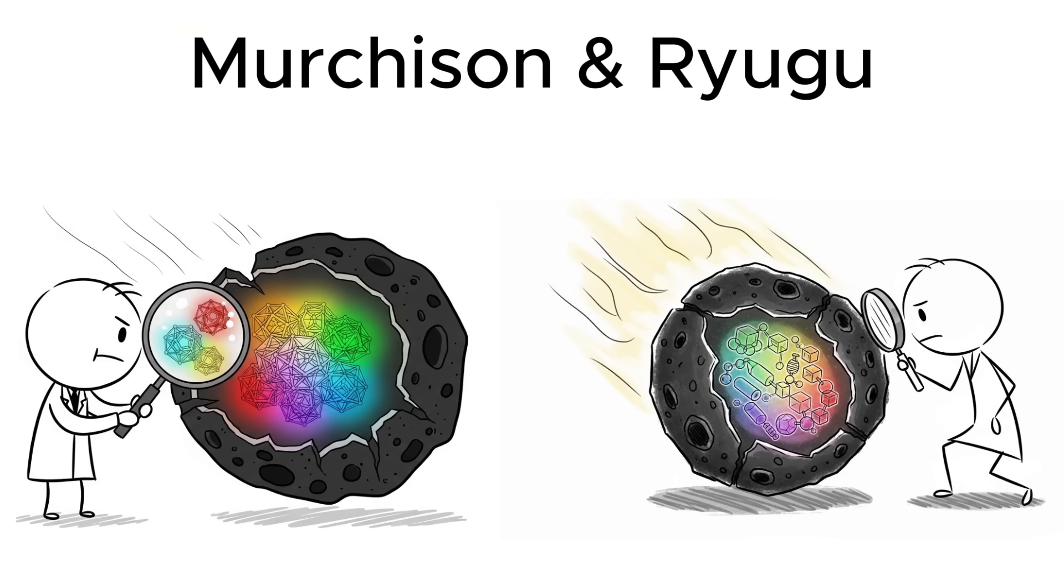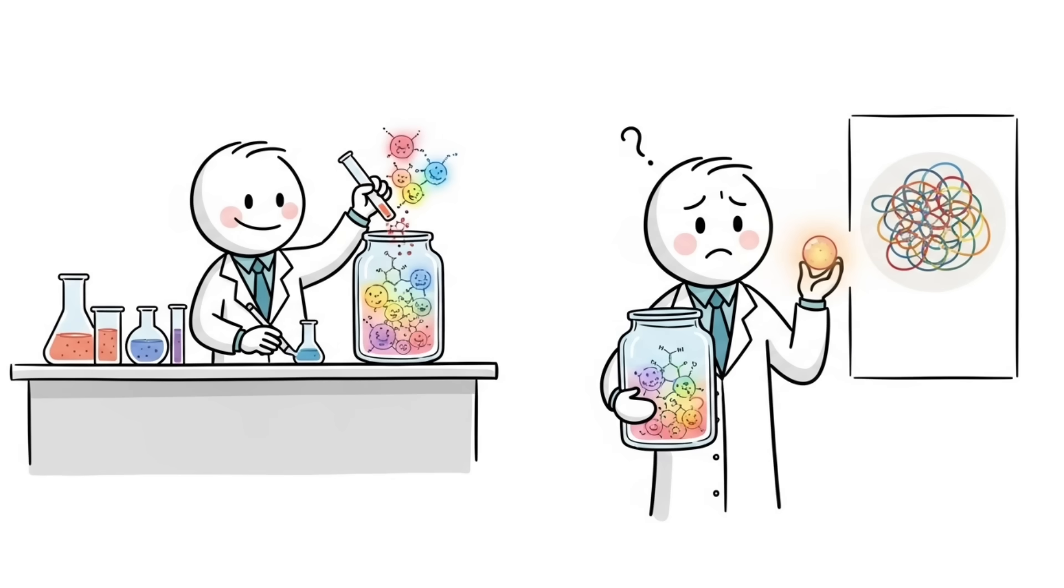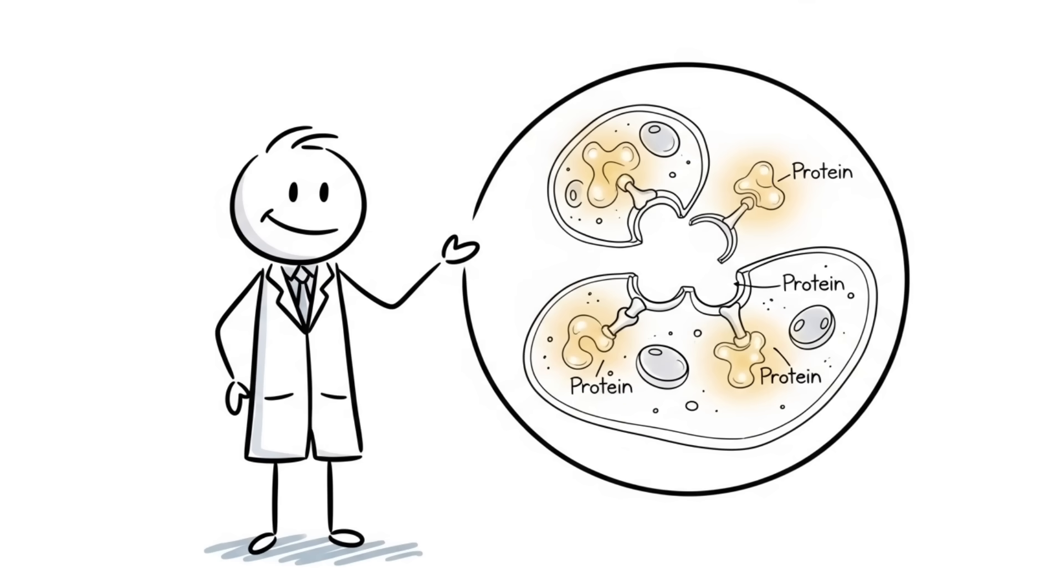The truth might be even stranger. Meteorites like Murchison and samples from the asteroid Ryugu have been found carrying over 20 different types of amino acids already formed in space. As one scientist put it, it is easier to build a house out of Legos when they are falling from the sky. We can make the parts, but we still can't build the machine.